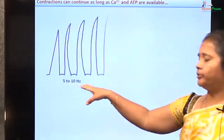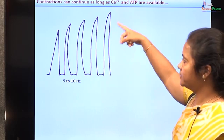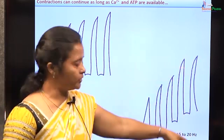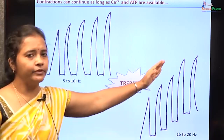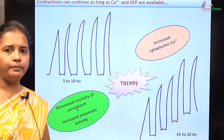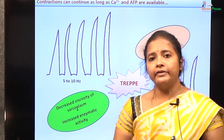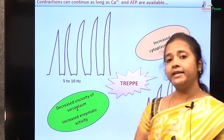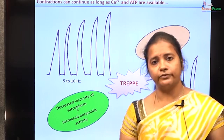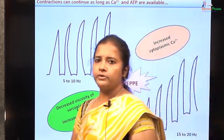When the stimulus continues at a rate of about 5 to 10 Hz, the amplitude of contraction increases with each stimulus. At still higher frequencies, incomplete relaxations occur and contraction amplitude keeps increasing. This staircase phenomenon is called treppe, described by Bowditch, and is due to increased availability of cytoplasmic calcium as well as increased heat generated from repeated contractions. This heat increases enzymatic ATPase activity in the skeletal muscle and decreases the viscosity of the sarcoplasm, reducing elastic resistance and facilitating easier actin-myosin interaction, thereby increasing the amplitude of contraction.